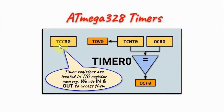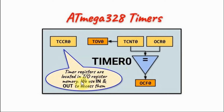Timer 0 also has a timer counter control register. The byte in this register determines the mode of operation — for example, whether TCNT is a counter or a timer — and also determines the clock frequency of Timer 0 by setting the prescaler values. The Timer 0 registers are located in IO register memory, so we can use the assembly IN and OUT instructions to access them.